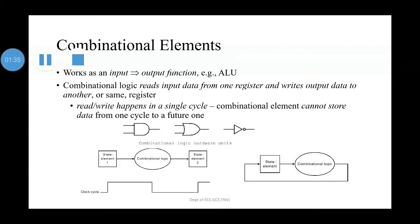Read/write happens in a single cycle. This combinational element cannot store data from one cycle to a future one. Only state elements can store a data value. Any collection of combinational logic must have its input come from a set of state elements and its output written into a set of state elements. The inputs are values that were written in a previous clock cycle, while the outputs are values that can be used in the following clock cycle.